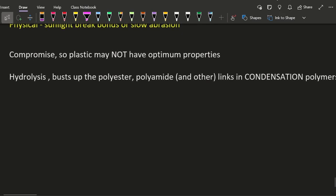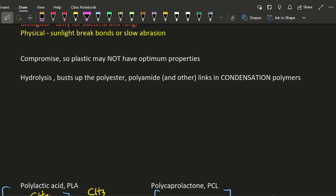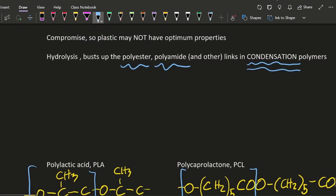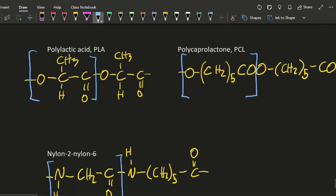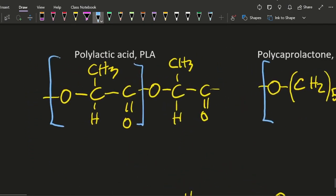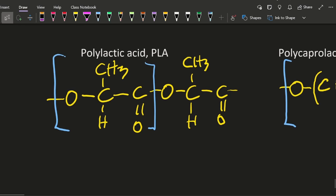So essentially, the hydrolysis breaks up the polyester or the polyamides into smaller units. Those are both condensation polymers - that's a polymer that when it's produced also produces a small extra molecule, normally water. Looking at polylactic acid, that's the one for 3D printers. I've got two repeating units there, so let me show you what would happen if water came along.